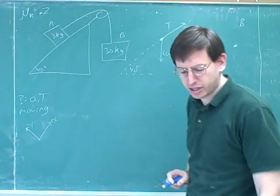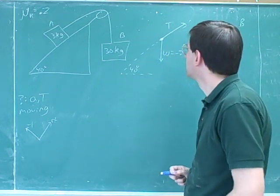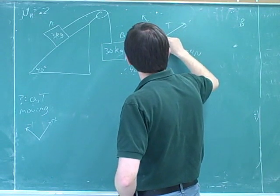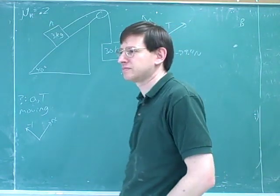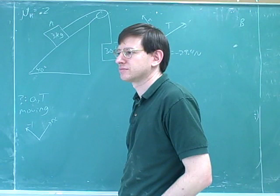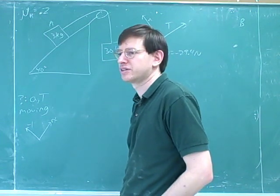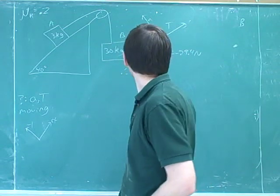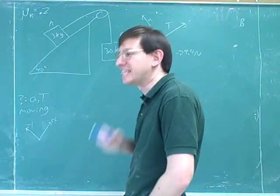And then we can put in this sine, negative 29.4 Newtons. All right, so we've got the weight and the tension. And we need a normal force pointing this way. So the normal force is not pointing straight up but it's pointing perpendicular to the plane. Good. Any other forces? So I've got the normal force, the tension, and the weight. Now there's friction.